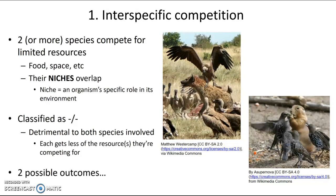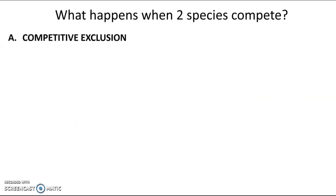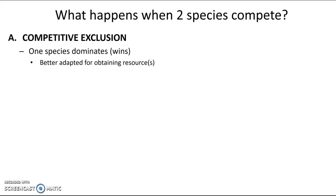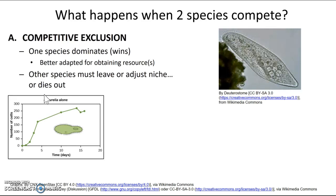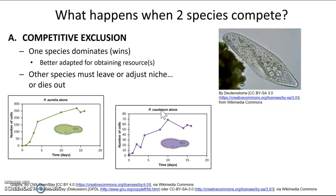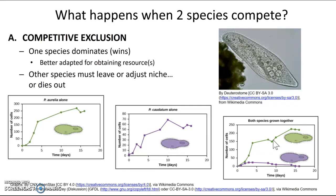When two species have to compete, there are two possible outcomes. The first is competitive exclusion, which means one species dominates or wins — it out-competes the other because it's better adapted for obtaining the resource they're competing for. When this happens, the other species must leave, adjust its niche, or die out. A classic example is an experiment with paramecium: researchers grew Paramecium aurelia alone and found it reproduced quickly, reaching over 150 individuals after five days. Paramecium caudatum also did well on its own. But when both were grown together, Paramecium aurelia outcompeted Paramecium caudatum, which was not as good at obtaining resources and died out.